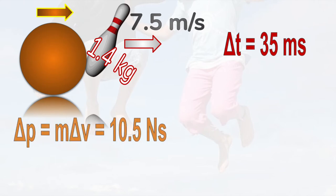The pin is 1.4 kilograms and shoots forward with a velocity of 7.5 meters per second. The time of contact between the ball and the pin was 35 milliseconds, and so the change in momentum, or impulse, is 10.5 Newton-seconds.